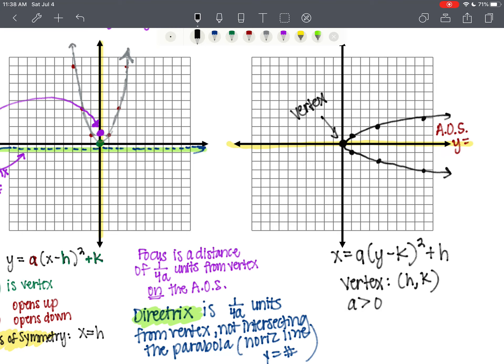If a is greater than 0, it opens right. And if a is less than 0, it opens left. And here, the axis of symmetry is y equals k. Y equals k. And then the directrix is going to be on the opposite side.